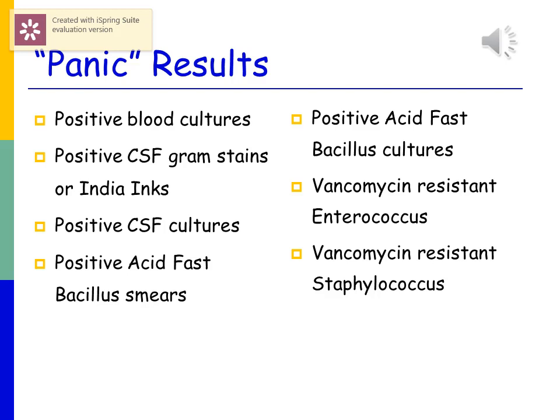These specimens are considered panic results. A positive blood culture must be immediately Gram-stained and reported to the physician; ID and sensitivities are also performed. A positive spinal fluid Gram stain is called in immediately. Other panic results include any positive fluid culture, any positive acid-fast bacillus smear or sputum smear, any positive Mycobacterium tuberculosis culture, vancomycin-resistant Enterococcus, or vancomycin-resistant Staphylococcus.